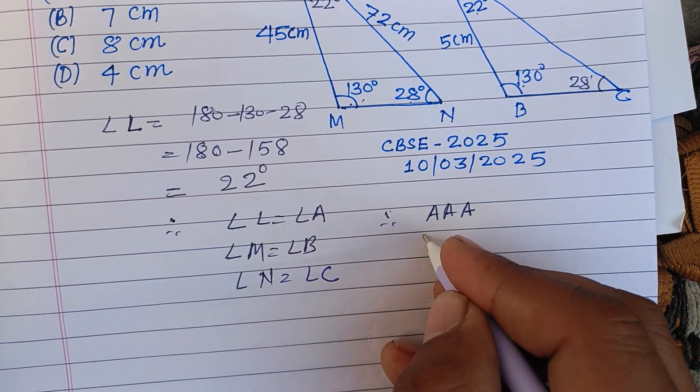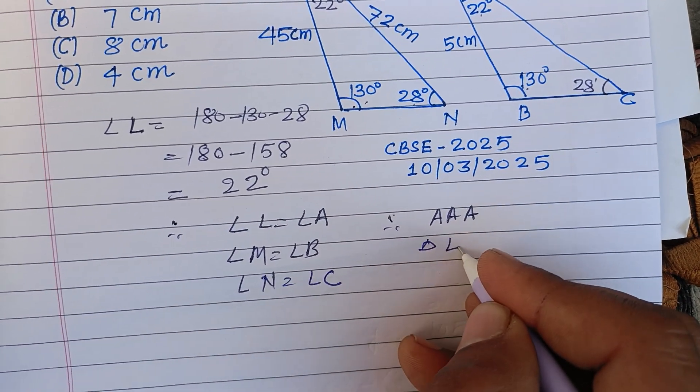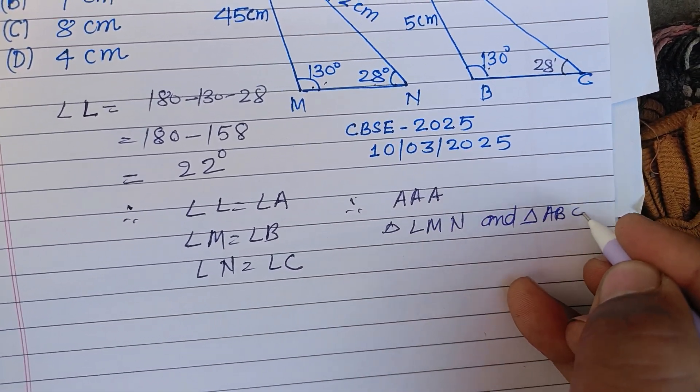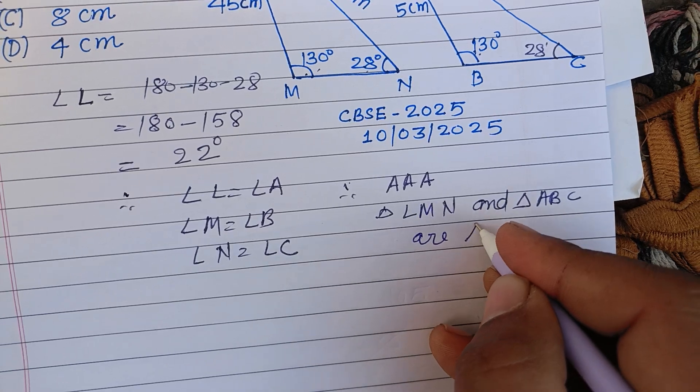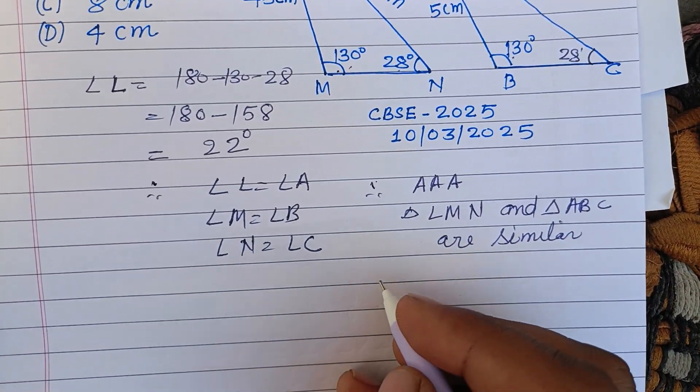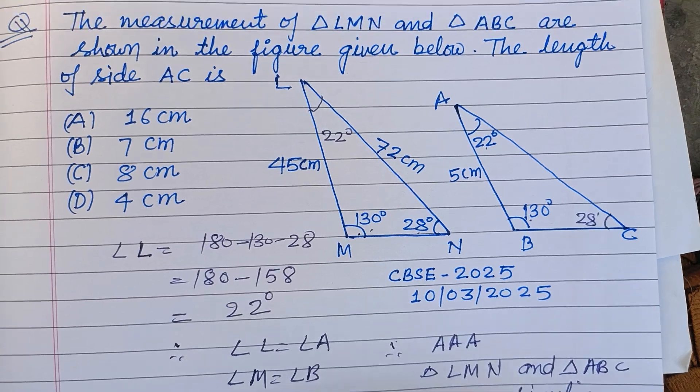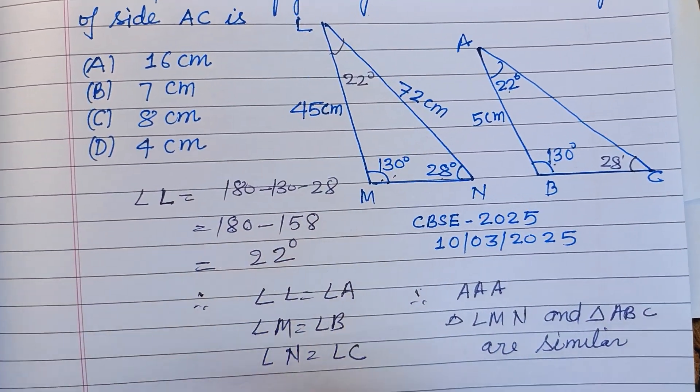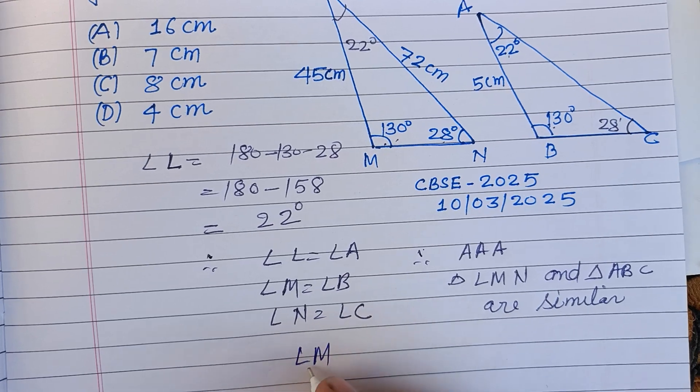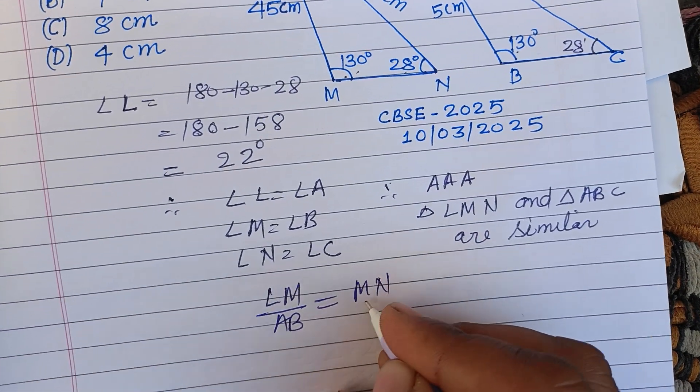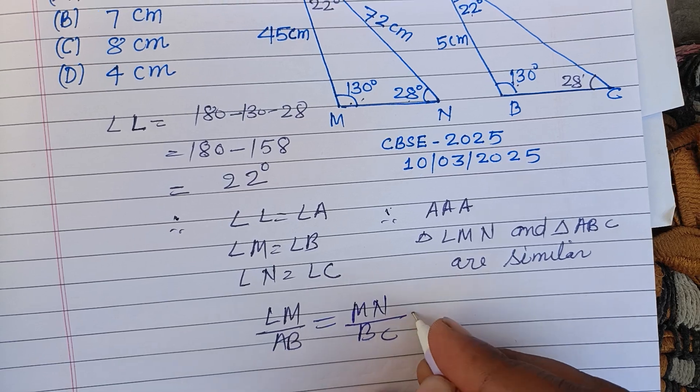And you know that similar triangles have the same ratio in their respective sides. Therefore LM upon AB equals MN upon BC equals LN upon AC.